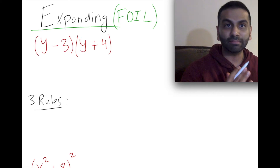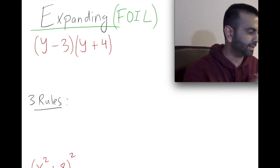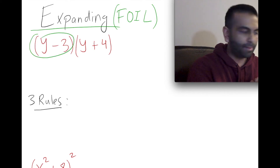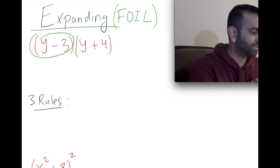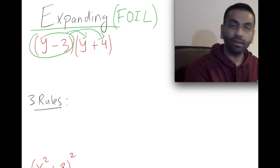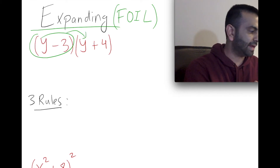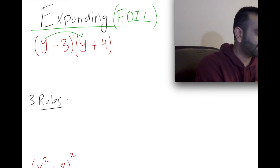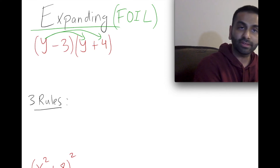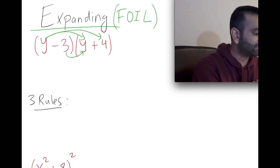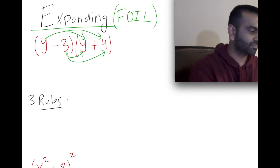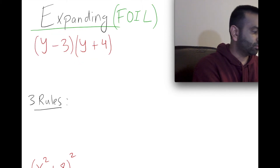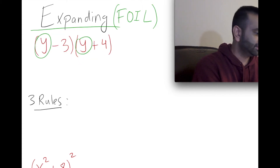One way to think about it is that you're really just doing the distributive property. For example, you're multiplying (y − 3) to each of the terms. That's equivalent to saying you'll multiply the y to both terms, and then multiply the negative three to both terms. Let's do that out and see what we get.